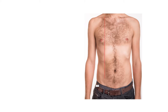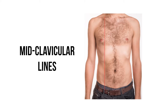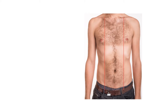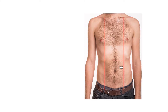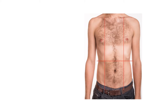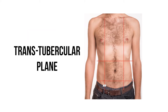We have two vertical planes that run through the middle of our collarbones, and these are the mid-clavicular lines. Next we have a horizontal line that lies along the inferior border of the ribs — the subcostal plane. Then the final line passes horizontally between the iliac tubercles of the pelvis. Looking anteriorly, this is found at the widest part of the iliac crest and we call this the trans-tubercular plane.